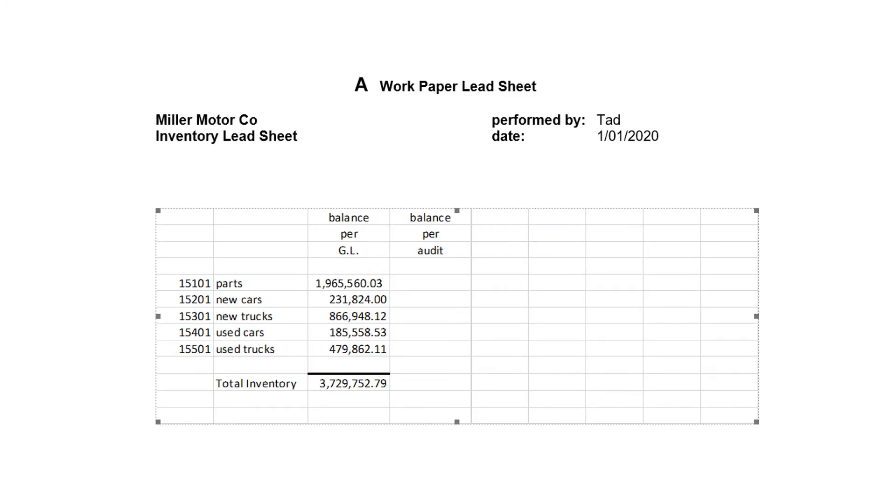First of all, Appendix A is the lead sheet. All we're going to talk about are parts inventory, but you'll notice Miller Motor Company has new cars, new trucks, used cars, used trucks. They've got multiple inventories. So we use a lead sheet to bring those accounts together. On their balance sheet, they're going to report $3,729,000 in inventory. Part of that will be parts, part of it will be new cars, part of it will be new trucks. And we bring that together with the lead sheet. So all the accounts that are going to be included rolled together for the balance sheet or income statement will be rolled together on a lead sheet.